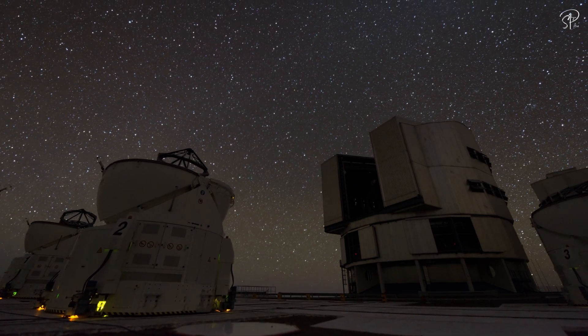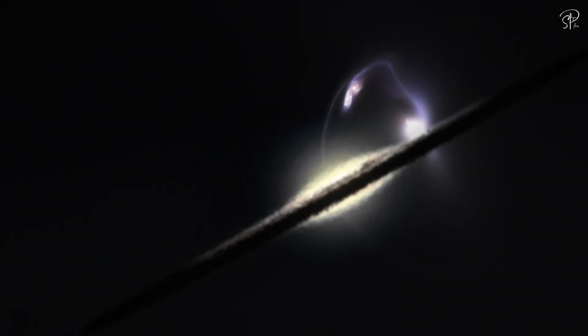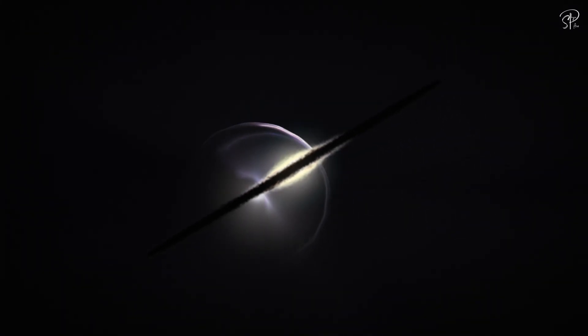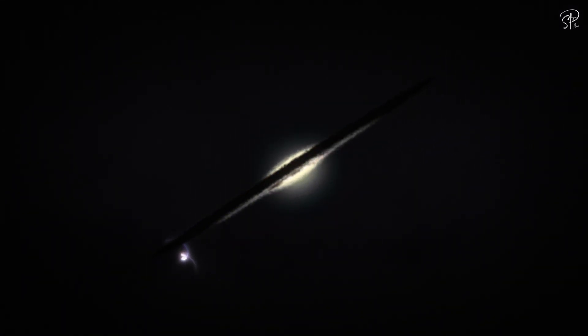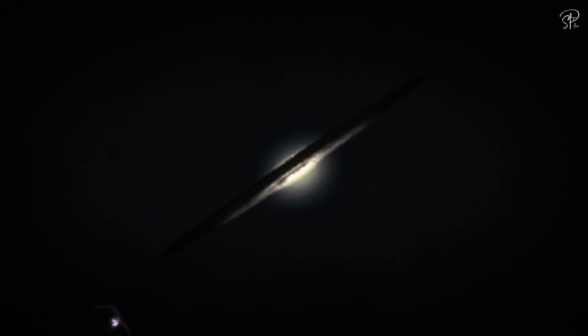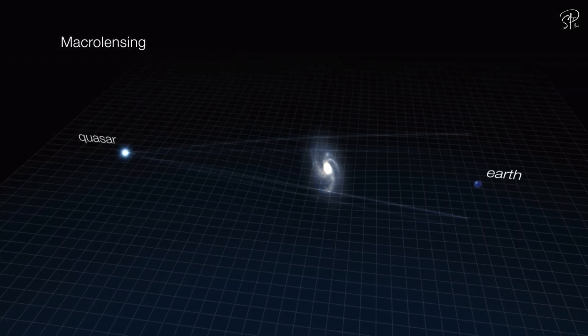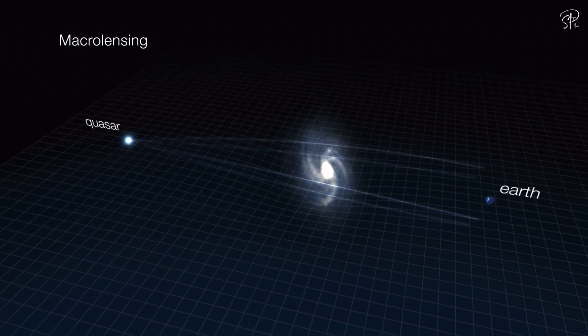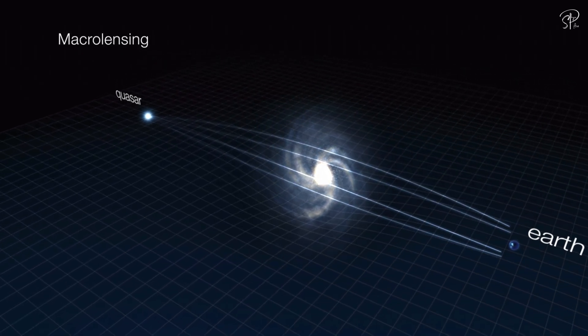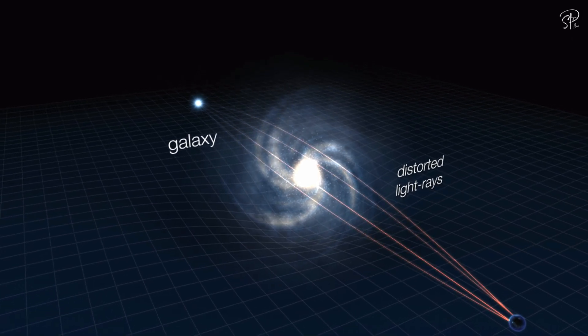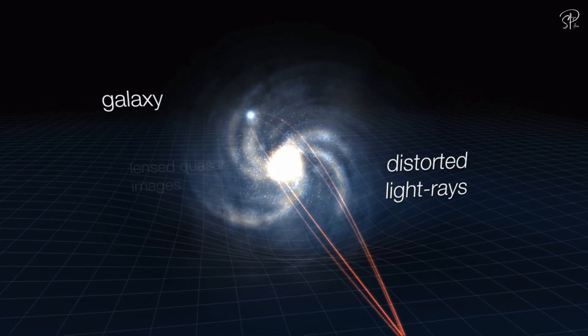Or it can also be just one star that has been observed through a gravitational lens. You know, the gravitational lensing that we came to know from Einstein's general theory of relativity. It is a phenomenon that occurs when light from a distant object is bent by the gravitational field of a massive object, such as a black hole or a galaxy, between the object and the observer.